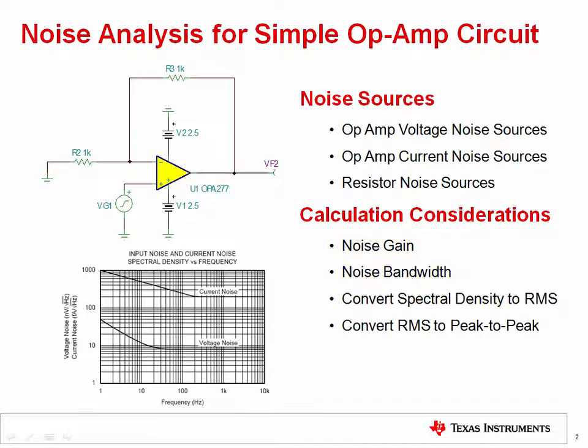The gain and bandwidth limitations of the op amp will also affect the total noise calculation. In the following videos on noise, I'll explain how to include all of these factors in order to calculate peak to peak output noise.